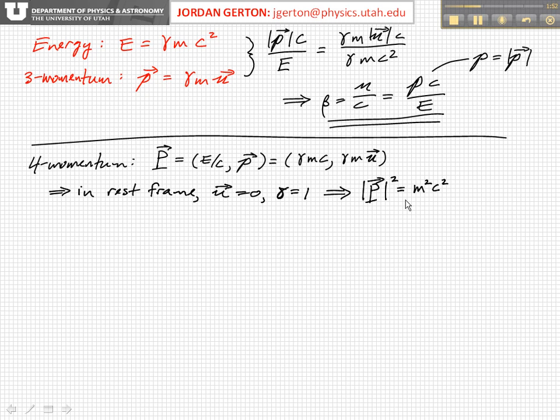Now let's have another look at the components of the four momentum again. So we have the four momentum is equal to the temporal component, which is e over c. This is what we've also been calling p zero, and the spatial component, which is actually three distinct spatial components, x, y, and z. And we saw that this is equal to gamma mc and gamma mu. Again, u is the three velocity, not the four velocity.